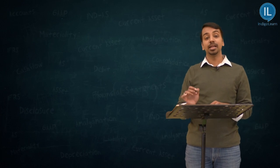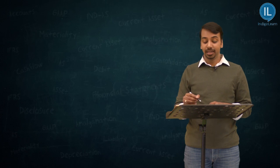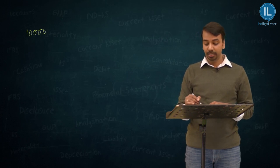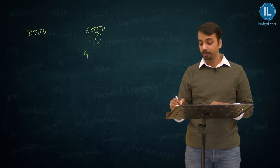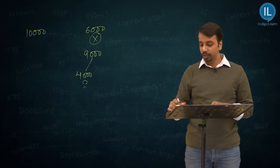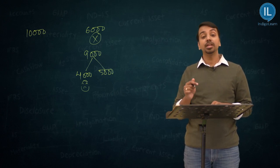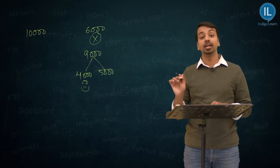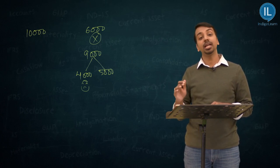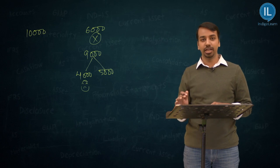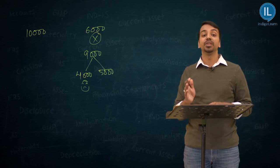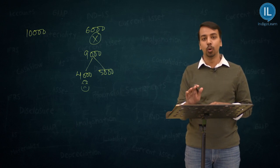Let us make some changes to the example and understand this concept in more detail. The company has issued 10,000 shares, out of which 6,000 have been underwritten by X. The public subscribed for 9,000 shares in total, out of which 4,000 were marked applications and 5,000 were unmarked applications. Can we say that since X had agreed to underwrite 6,000 shares and we received only 4,000 marked applications, the liability of X is 2,000? No, it is too quick to conclude that.